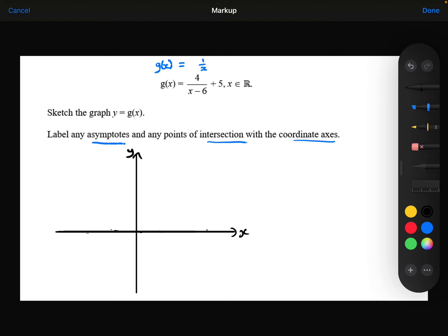Okay, so the 1 over x graph has asymptotes of y equals 0 and x equals 0. It looks something like that.